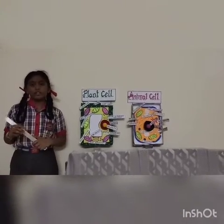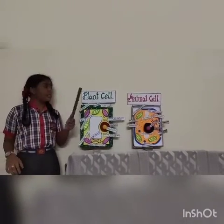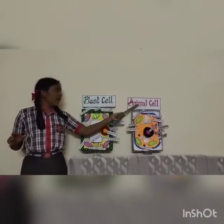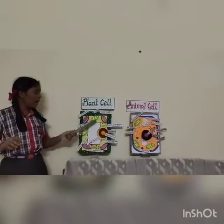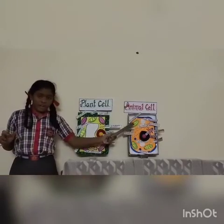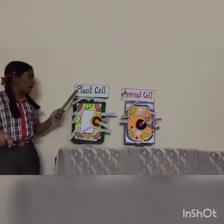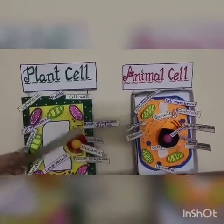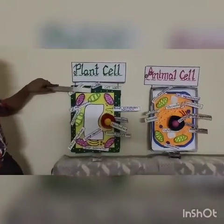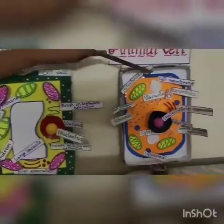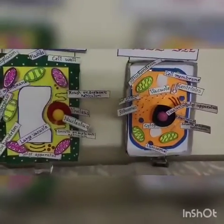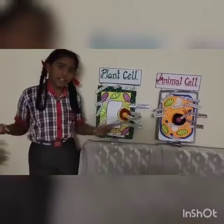Now I am going to tell you all the similarities between a plant cell and an animal cell. Both are smaller in size. Both are eukaryotic cells. Both have cytoplasm, which is called a jelly-like structure. Both have cell membrane. Both have mitochondria, which is also known as the powerhouse of a cell.